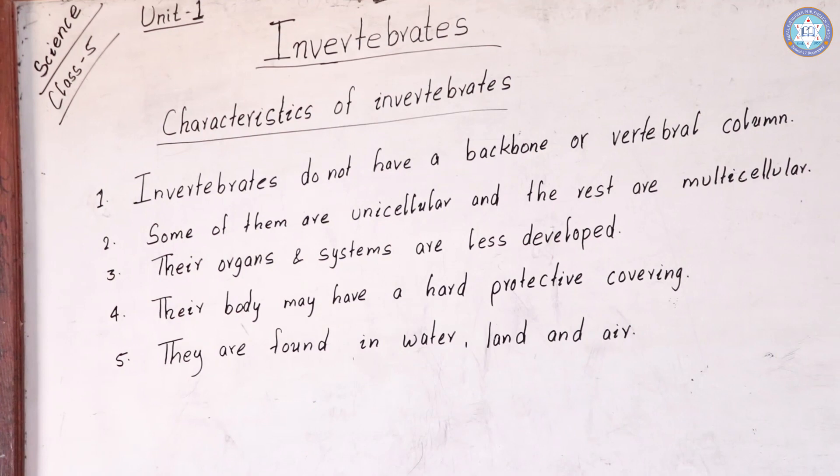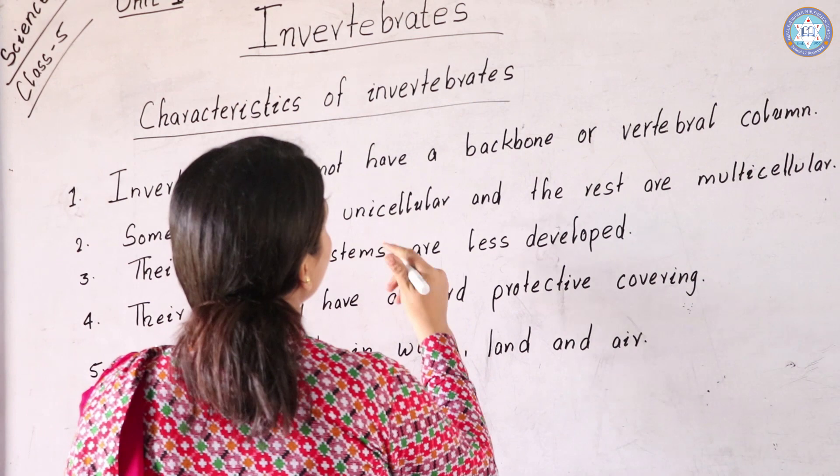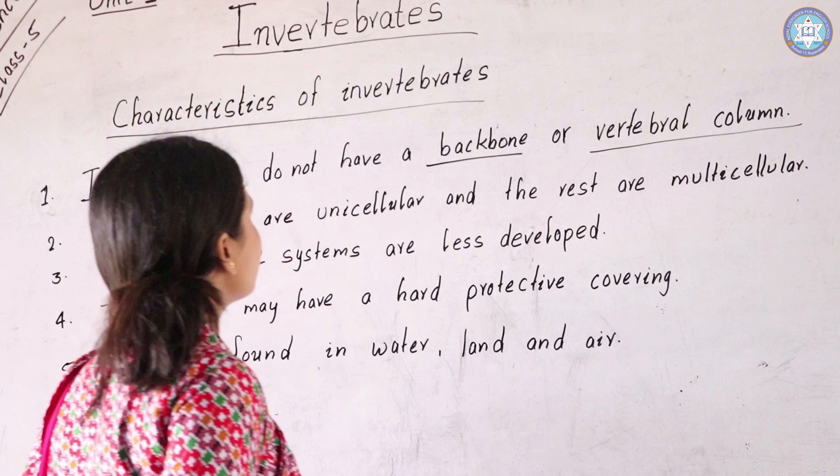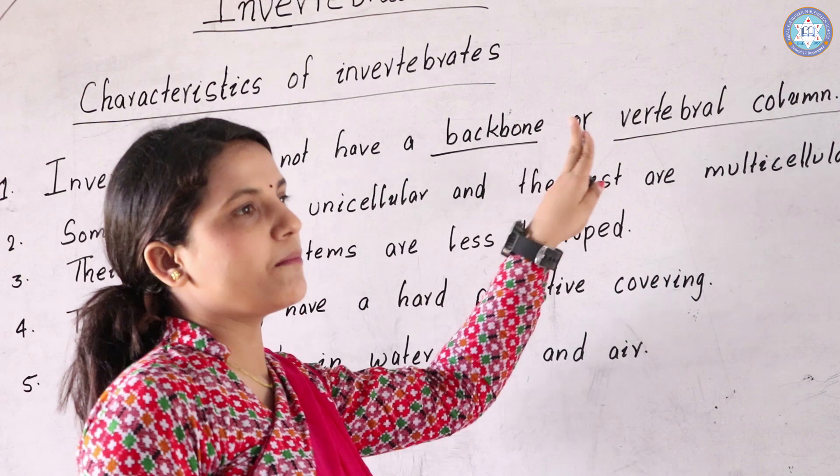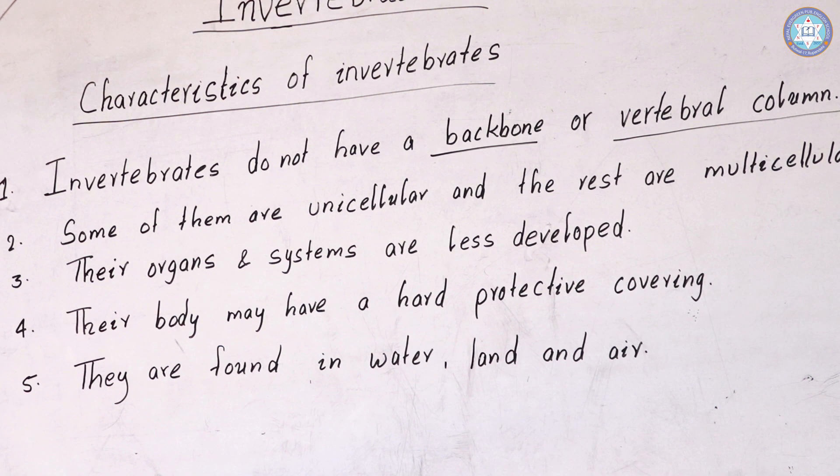First characteristic: Invertebrates do not have a backbone or vertebral column. That means the backbone and vertebral column are absent. So the structures of Invertebrates are very primitive types.